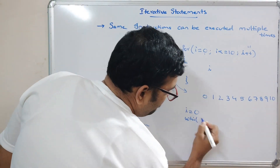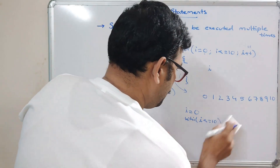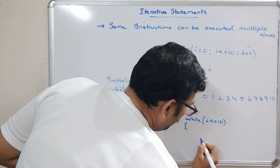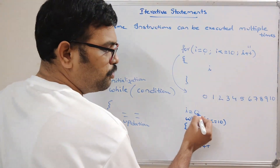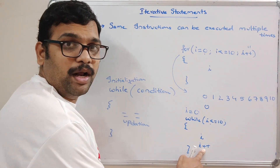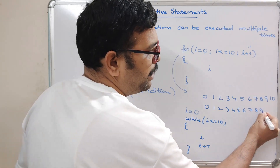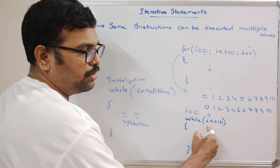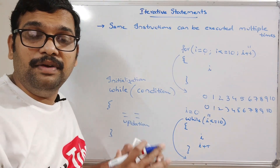Similarly for the while loop: initialize i = 0, then 'while(i <= 10)', inside print i and do i++ for updation. i = 0, zero is less than or equal to ten, zero is printed, i becomes one, one is printed, and so on — two, three, four, five, six, seven, eight, nine, ten. When i equals ten, ten is printed and updated to 11. 11 is not less than or equal to ten — false — so control comes out from the loop.